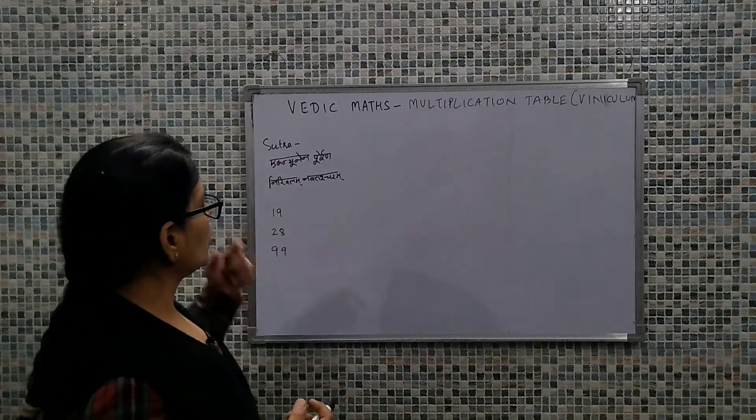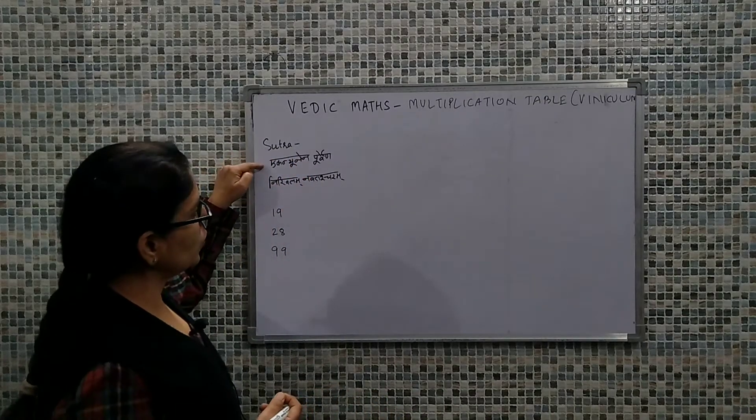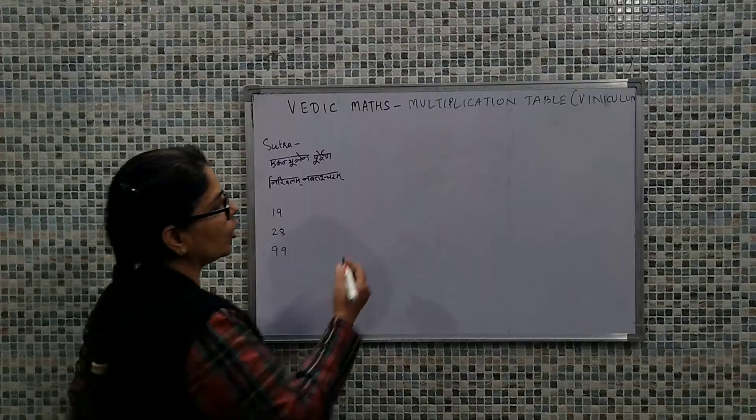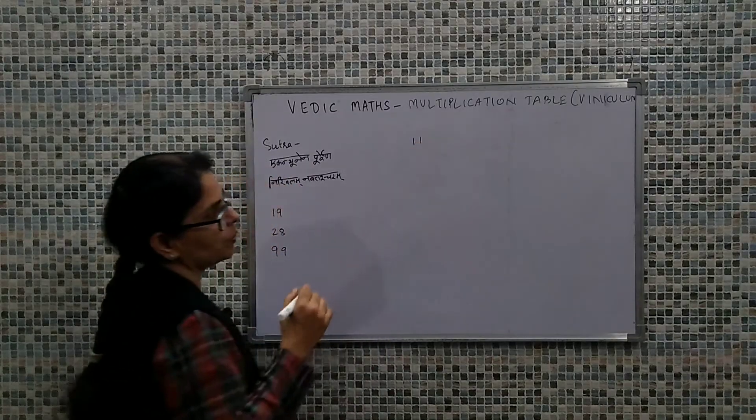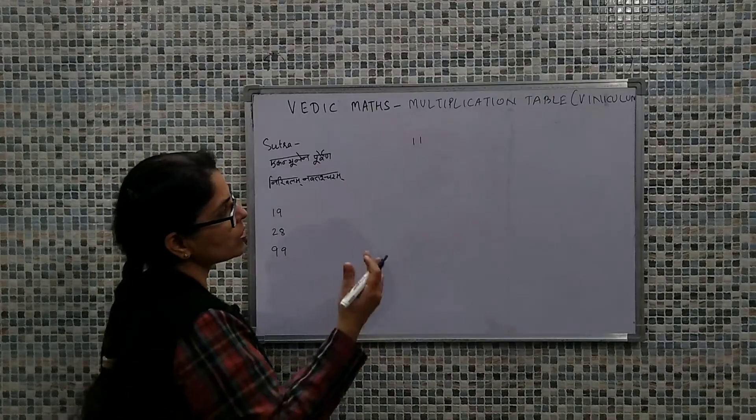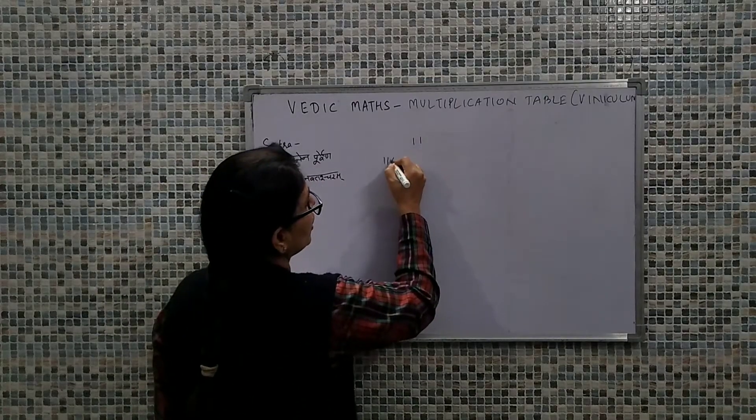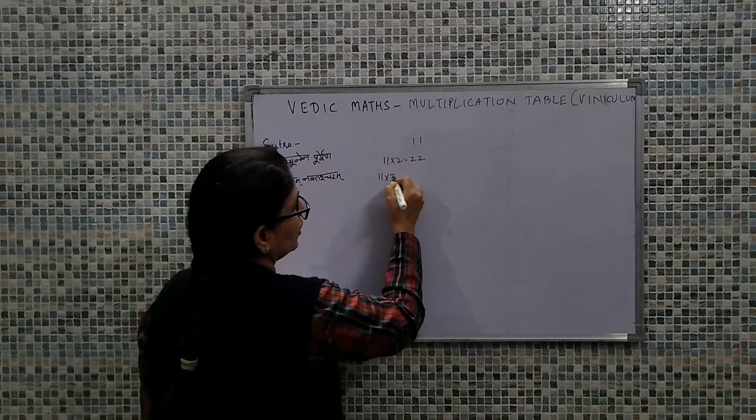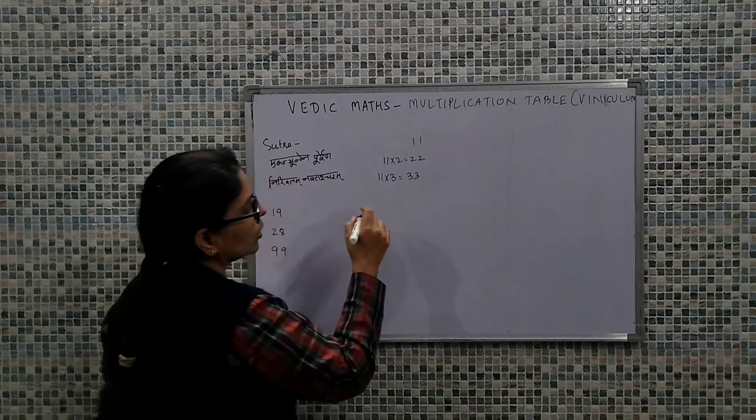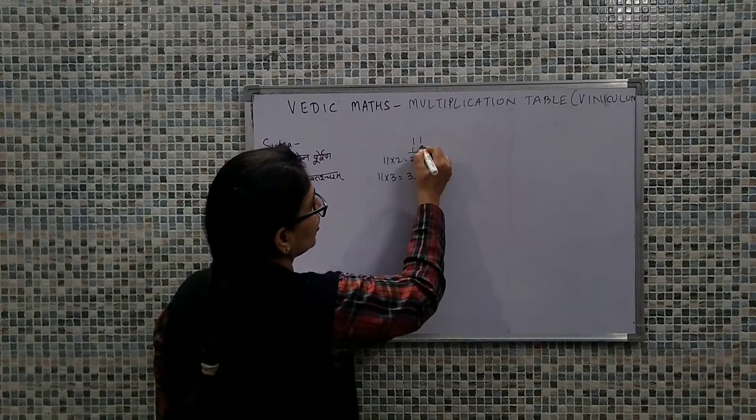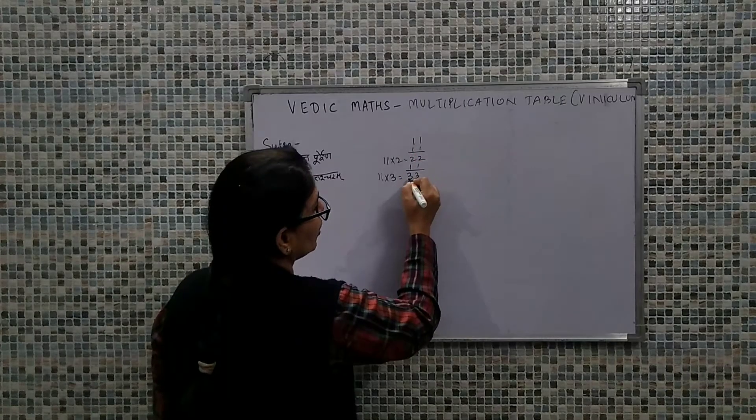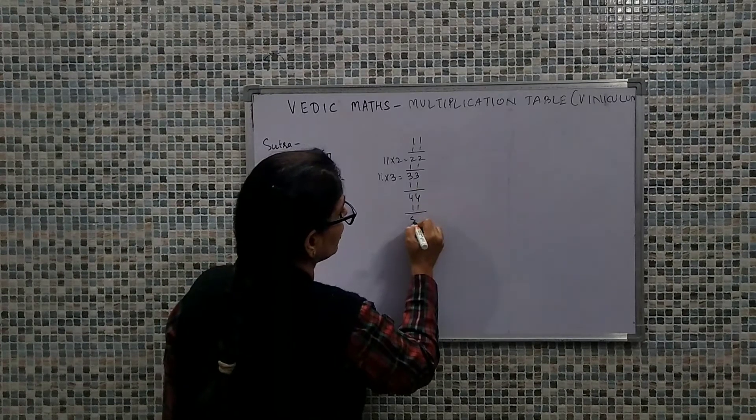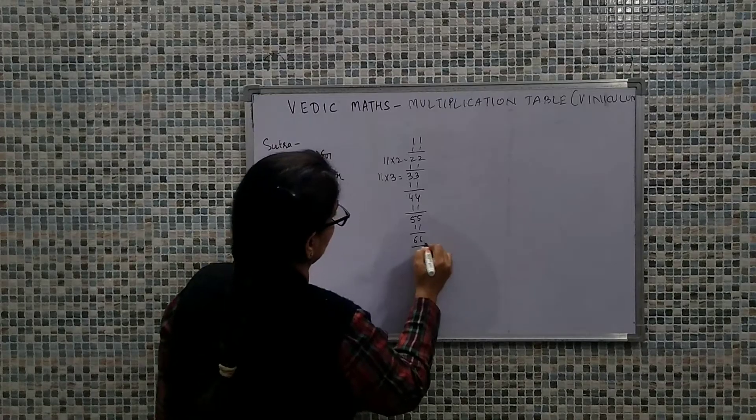And second is using Nikhilam Navatascaramam Dasatah. Basically if we have smaller values, suppose 11, what is the conventional way? I will simply multiply it by 2. If I want 3 table, it will be multiplied by 3, or what's the other way out? I'll get 22, I'll get 33, I'll get 44, and that is 55, and that is 66. So this is the process.